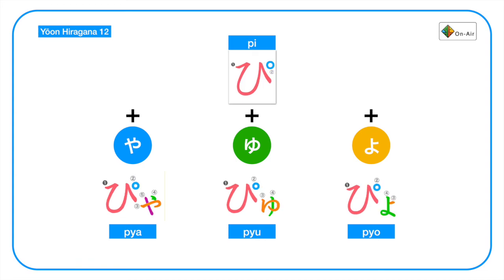Last one, we have the handakuon letter pi. So pi plus ya, yu, yo, we have pya, pyu, pyo. Pya, pyu, pyo.